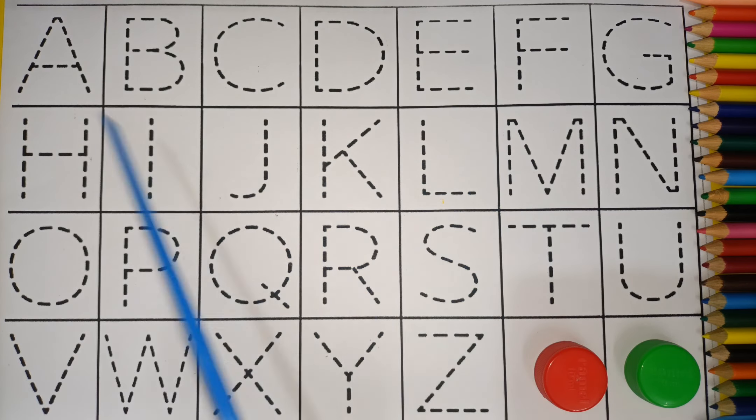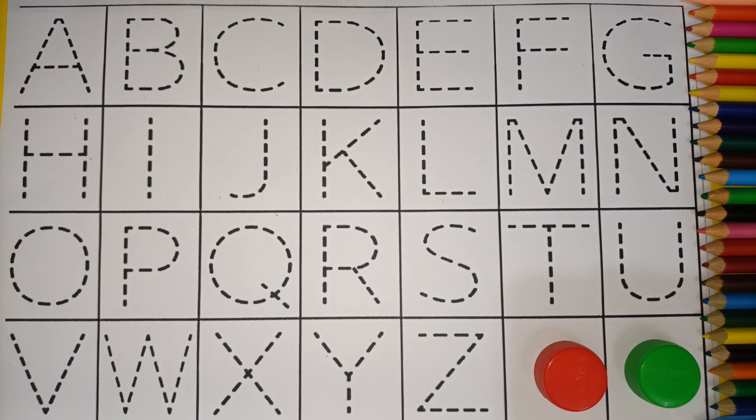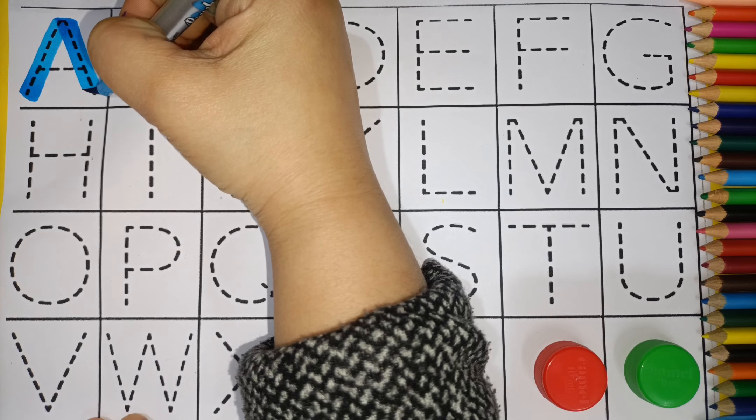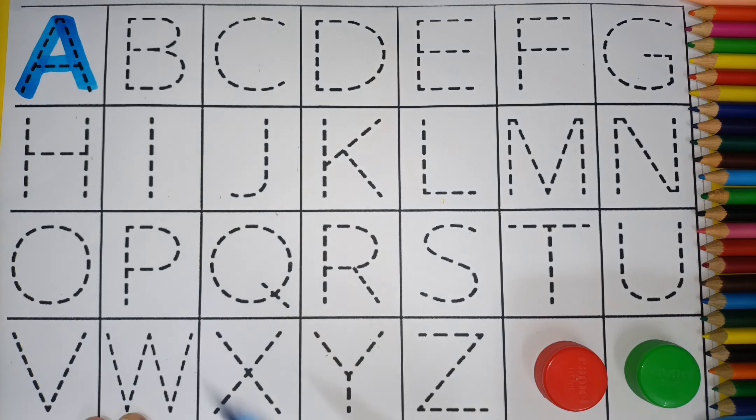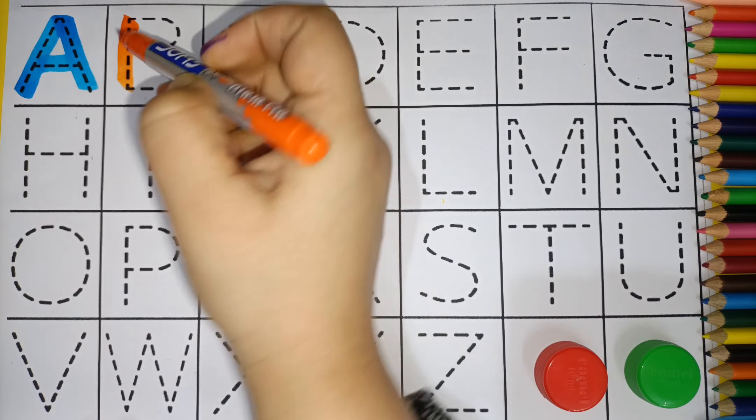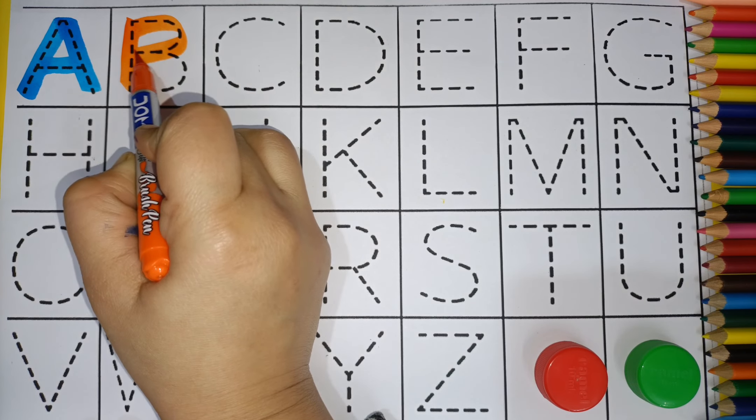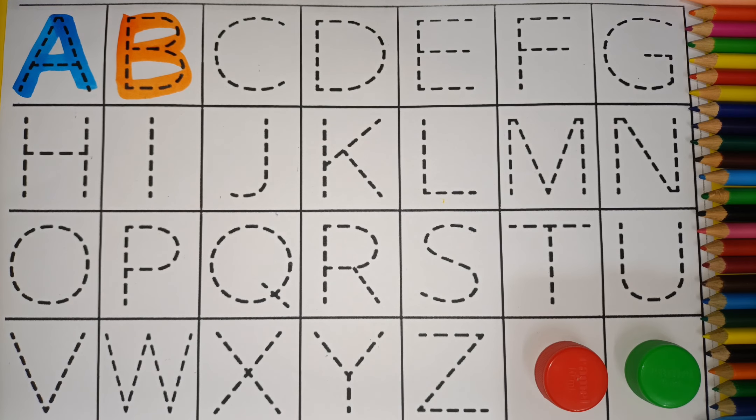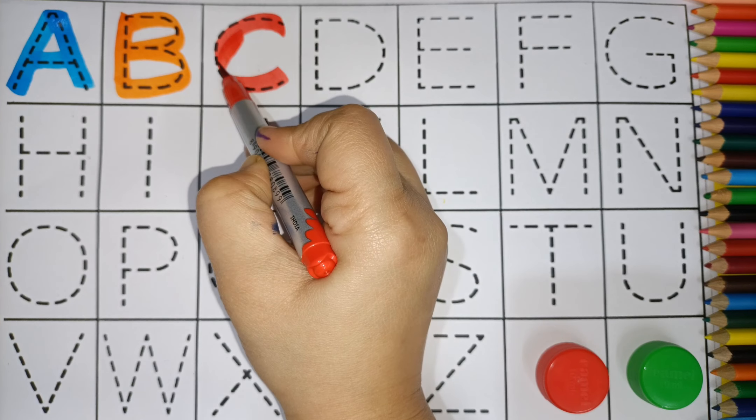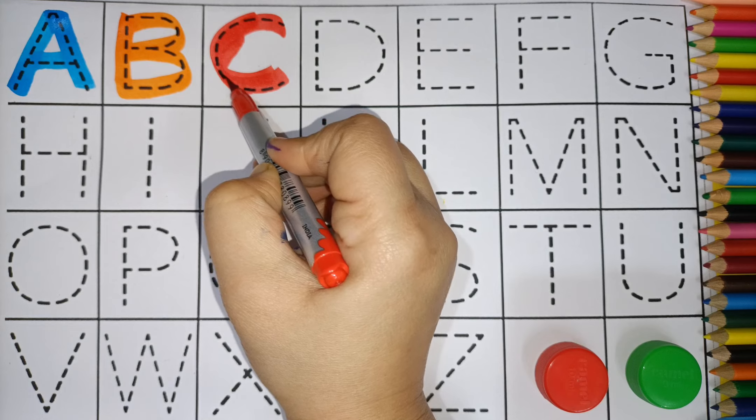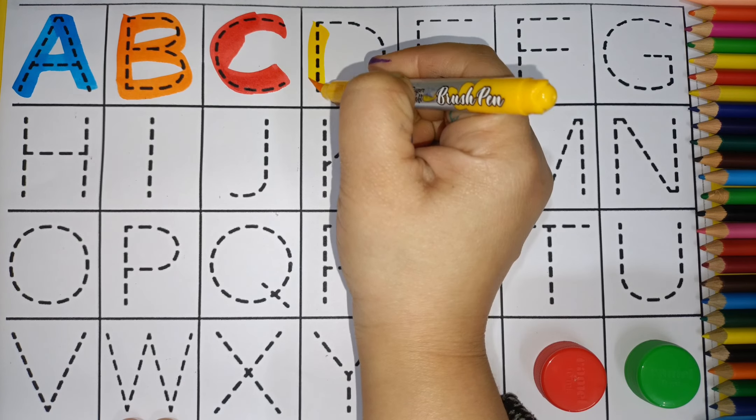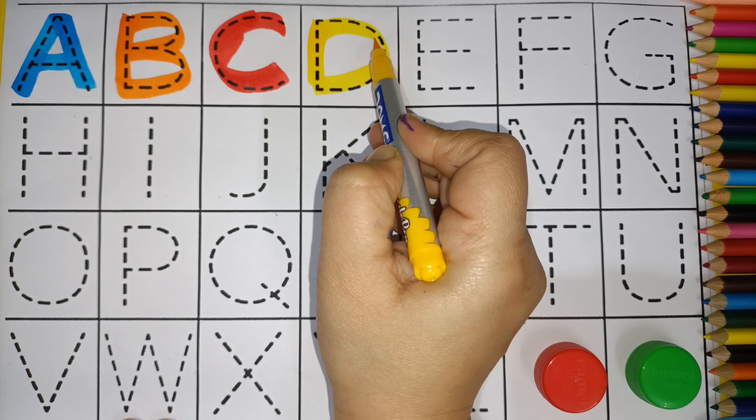Alphabets A to Z. A. A for apple. B. B for ball. C. C for cat. D. D for dog.